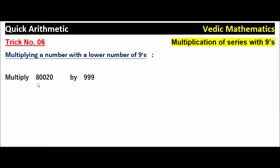Now see another example: Multiply 80,020 by 999. Here also, 80,020 is a 5-digit number and 999 is a 3-digit number. So multiplying a number with a lower number of 9's. Three 9's are there, so first you take this 80,020.